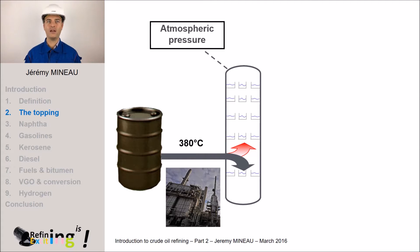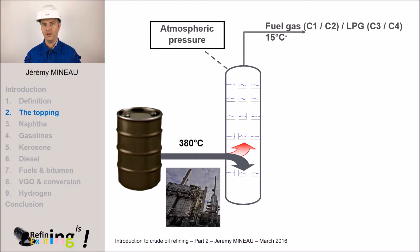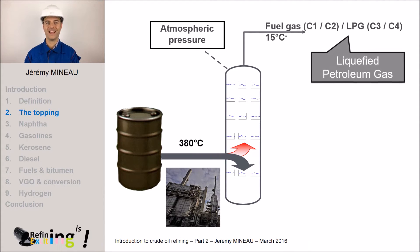At the top of the column we recover light molecules — C1 and C2, meaning methane and ethane. This is what we call the fuel gas. Then we recover molecules with 3 and 4 carbon atoms — propane and butane. This mixture is called LPG, for liquefied petroleum gas.